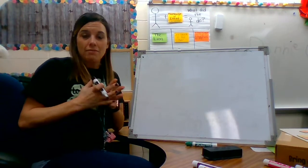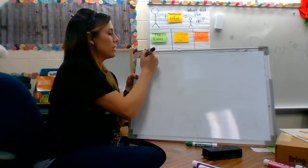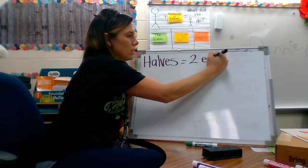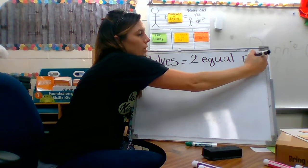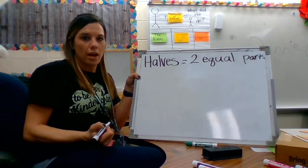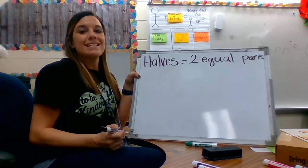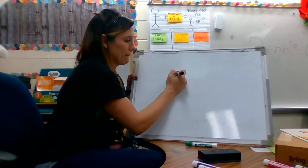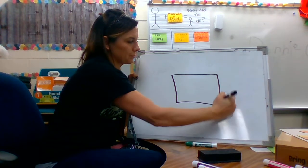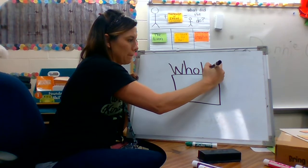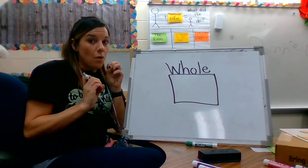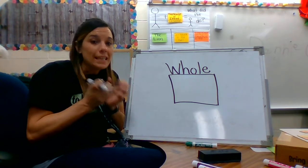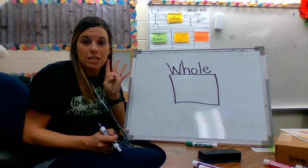So we just talked about halves — halves is two equal parts. Let me write that up here: halves equals two equal parts. They have to be equal; if they're not equal, then it's not halves. Now I'm going to do another square. So I have a whole square. Now I have three friends wanting a piece of my candy bar, so I have to split it up equally between me and three friends — into four parts.